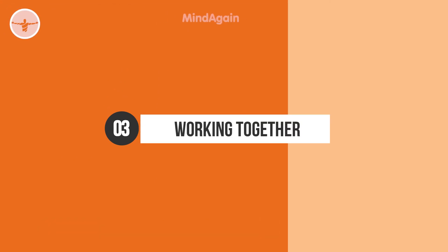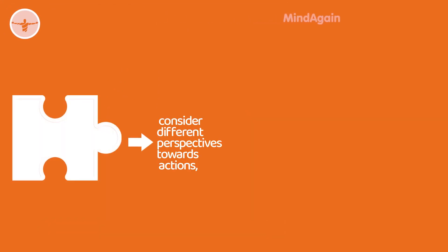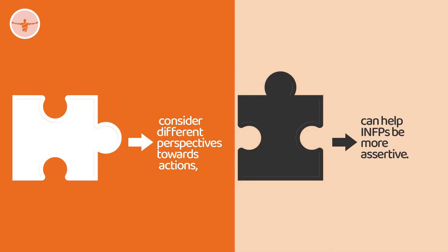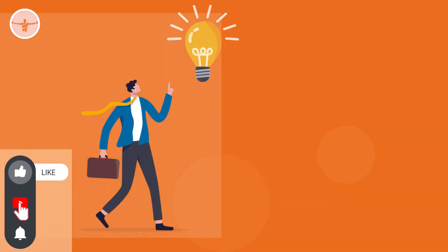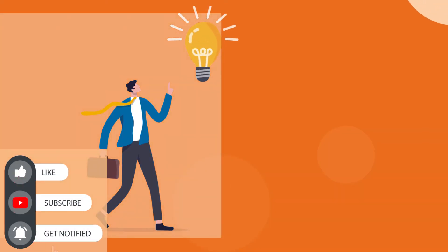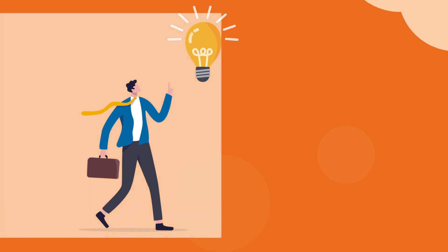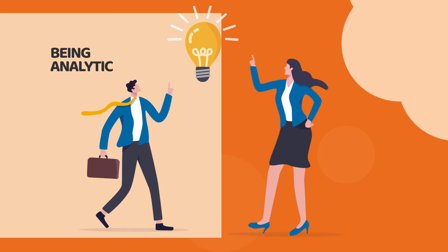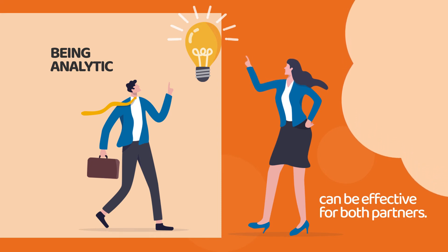Working Together. INFPs can help ESTPs consider different perspectives towards actions, while ESTPs can help INFPs be more assertive. INFPs bring creativity and empathetic thinking to a work environment, daydreaming and being analytic to ensure that the work comes out well. The ESTP, on the other hand, offers attention to detail and fact-based reasoning. Hence, their working together can be effective for both partners.